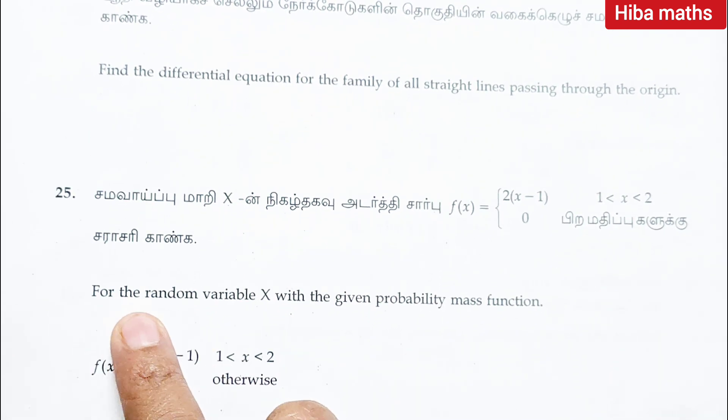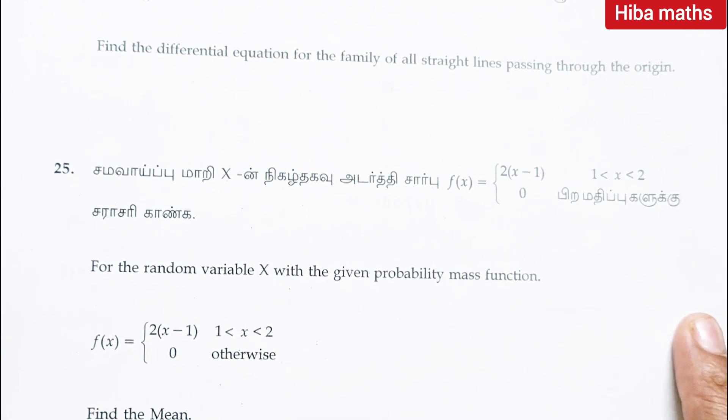Question 25: for the random variable x with a given probability mass function f of x is equal to 2x minus 1, x is greater than 1 less than 2 otherwise 0, find the mean.